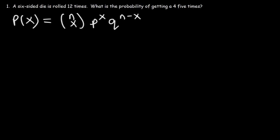In this problem, we need to determine four things: n, x, lowercase p, and lowercase q. n is the number of trials. The six-sided die is rolled 12 times, so n is 12.